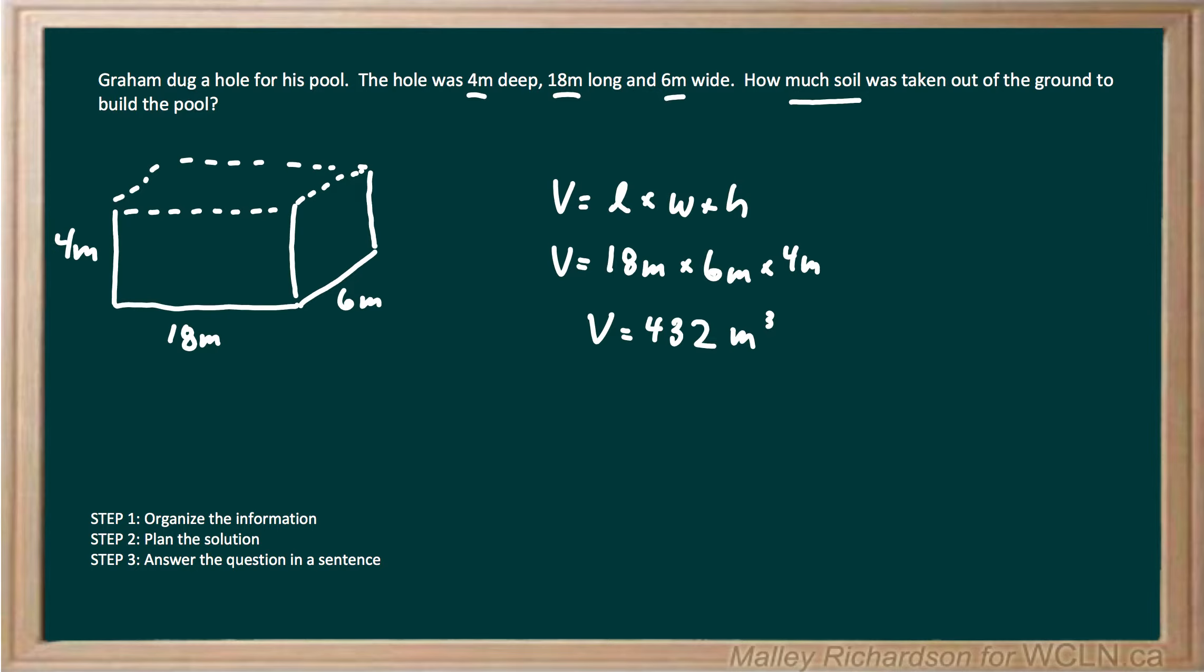Now we move on to step 3, where we answer our question in the form of a sentence. Our sentence solution is: 432 cubic meters of soil was removed. We have our units and our final answer in the form of a sentence.